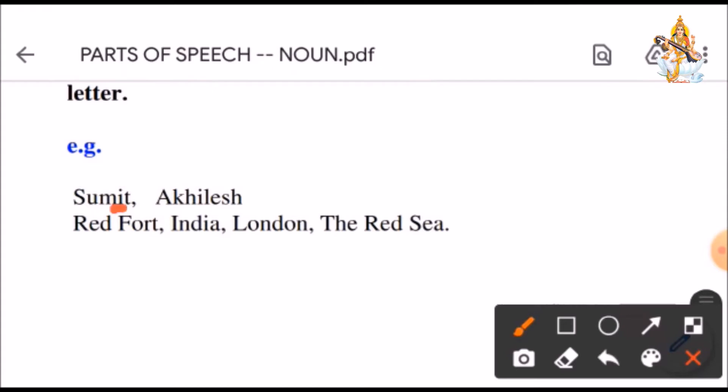For example, Sumit, Akhilesh, these are specific names given to children. Red Fort is a name given to fort. India is a country. London is also a country. And Red Sea, a name is given to sea, that is Red Sea.